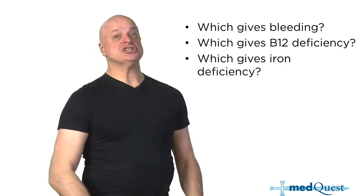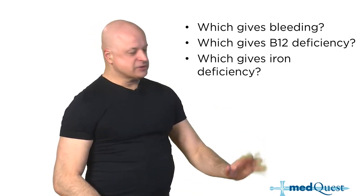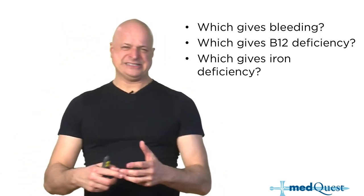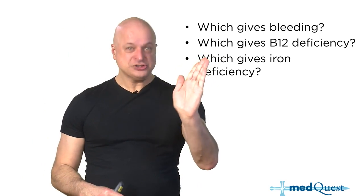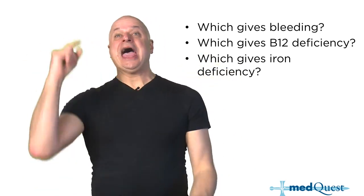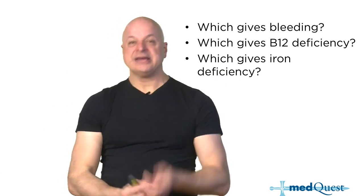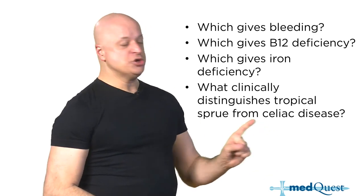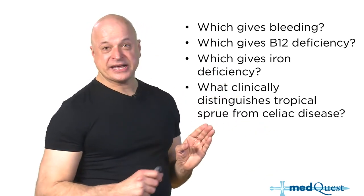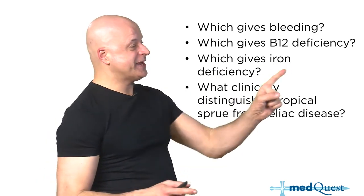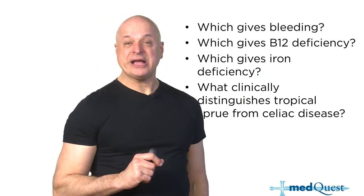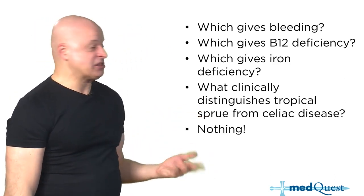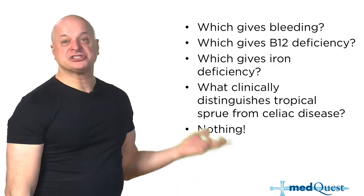Celiac disease is really common; tropical sprue and Whipple's are profoundly rare. So it usually comes down to celiac versus chronic pancreatitis, and the clue is iron malabsorption — celiac will distinguish it. What clinically distinguishes tropical sprue from celiac disease? Nothing. It's not until you get a bowel biopsy. Dermatitis herpetiformis is associated with celiac — it's a dermatitis in the form of herpes — but it's not there most of the time.